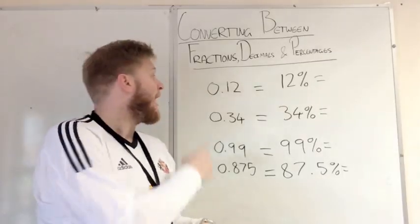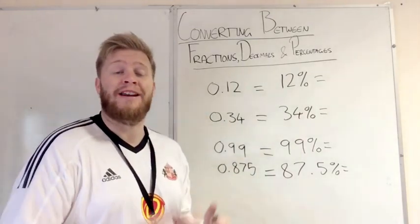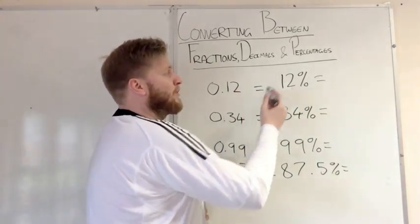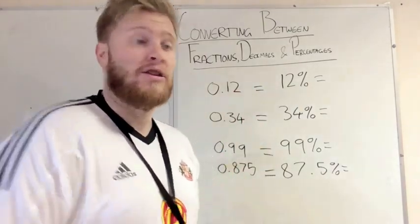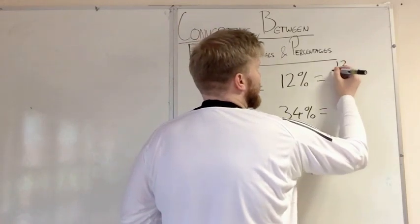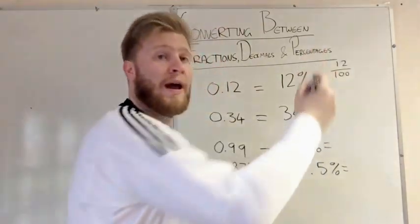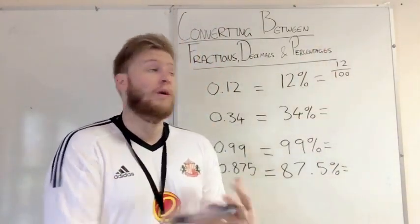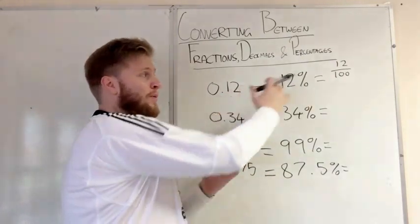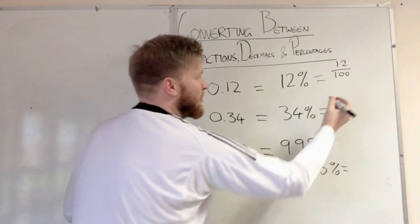Right, so now we're going to look at how to convert from a decimal or a percentage into a fraction. And again, it's quite simple. If we've got 0.12 or 12%, the easiest way to write that fraction down is 12 over 100. If it's 12%, we've got 12, because 100% is the whole, it's over 100. 0.12, we turn it into a percent, and we know we've got 12 over 100.